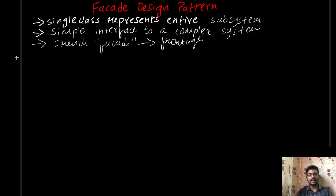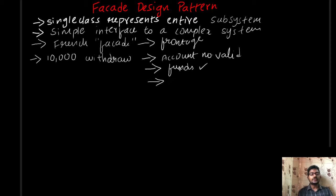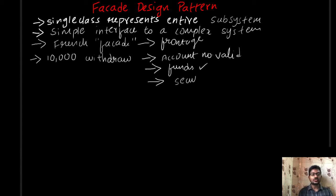For example, if you go to a bank and apply for a withdrawal, the bank validates your account number to check if it is valid. Next, it checks whether you have sufficient funds. You have to validate the account number, validate the funds, and also use a security code.